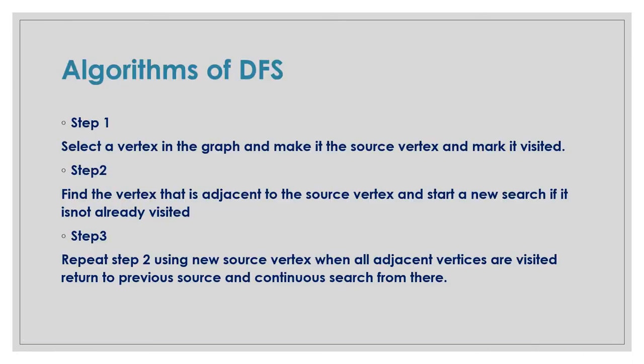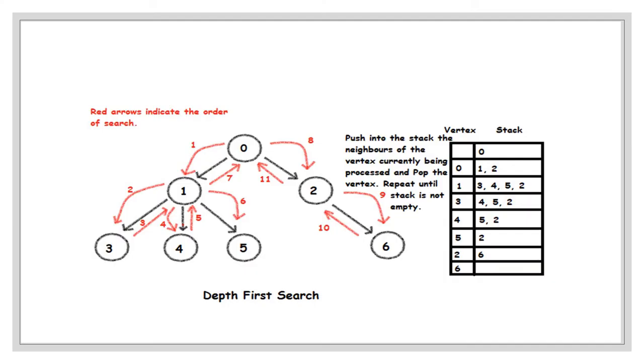If we talk about its complexity: if n is the number of vertices in the graph and the graph is represented by an adjacency matrix, then the total time taken to perform DFS is O(n²). If the graph is represented by an adjacency list with n vertices and e edges, then the time taken to perform DFS is O(n + e).